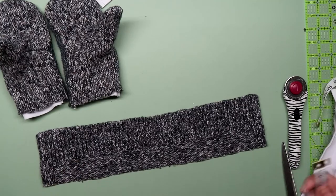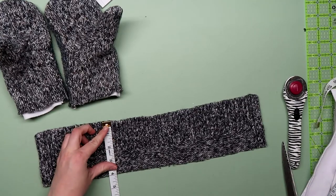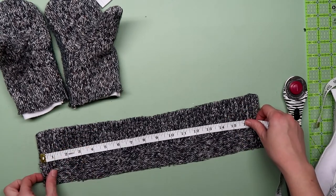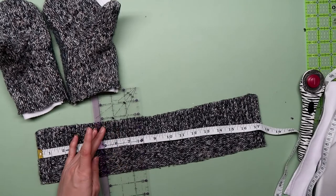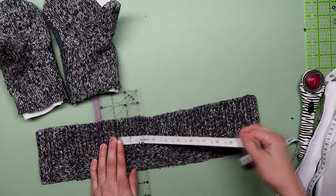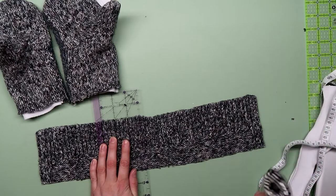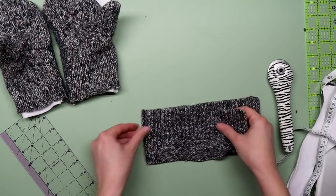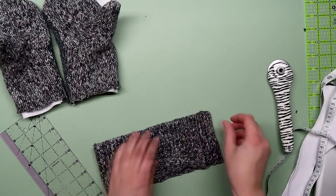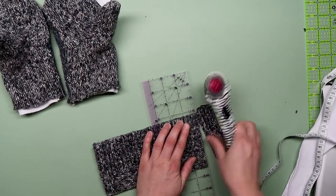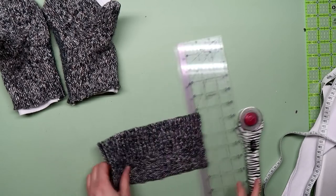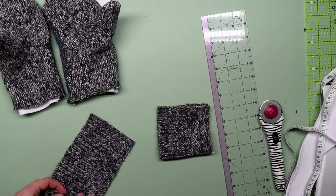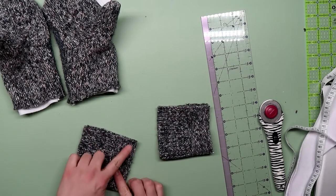For the cuff, take that strip that we cut off and trim it to 4 inches by 8 inches. You will need two of these if you're not using the cuff of the sweater. Fold the strips right side together and stitch a line down the short edge using a quarter inch seam allowance.